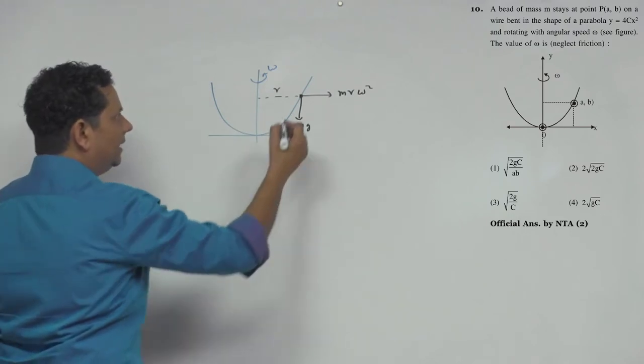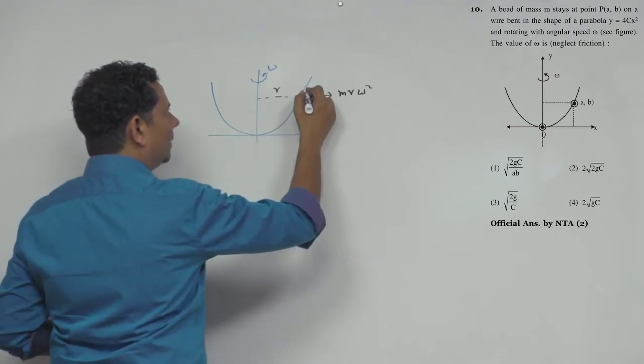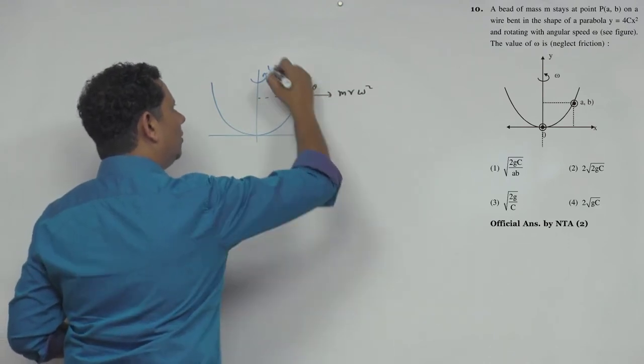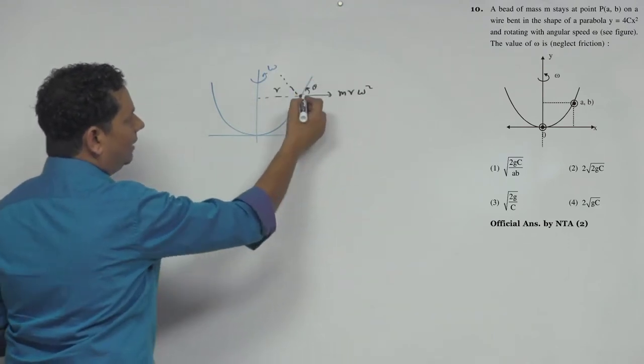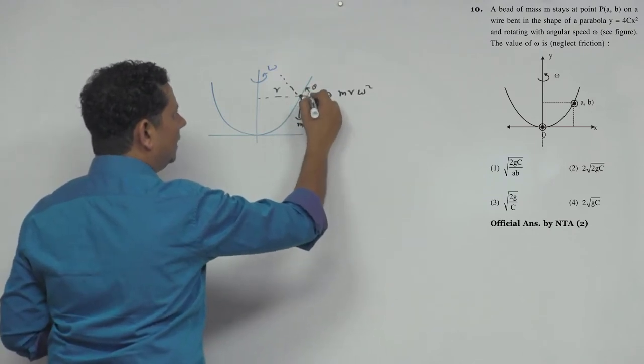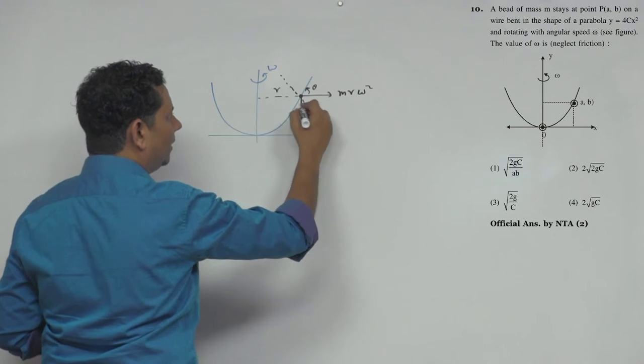Suppose we call this angle θ. Perpendicular to the surface, there is a normal force. If this angle is θ, then this angle will also be θ.